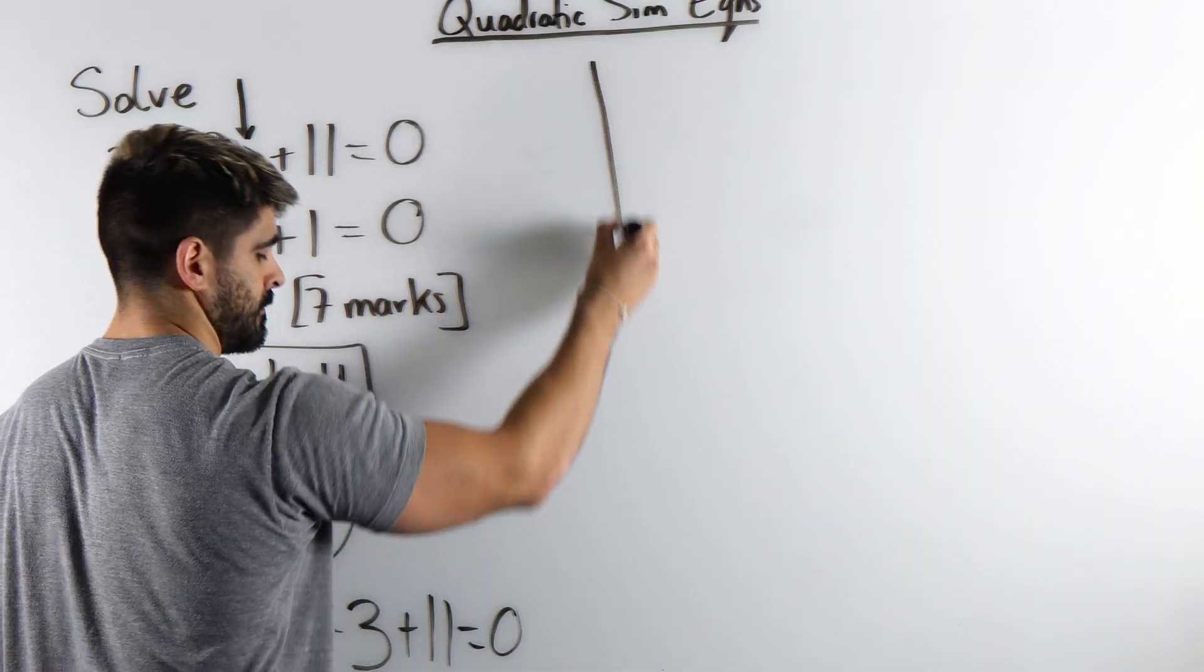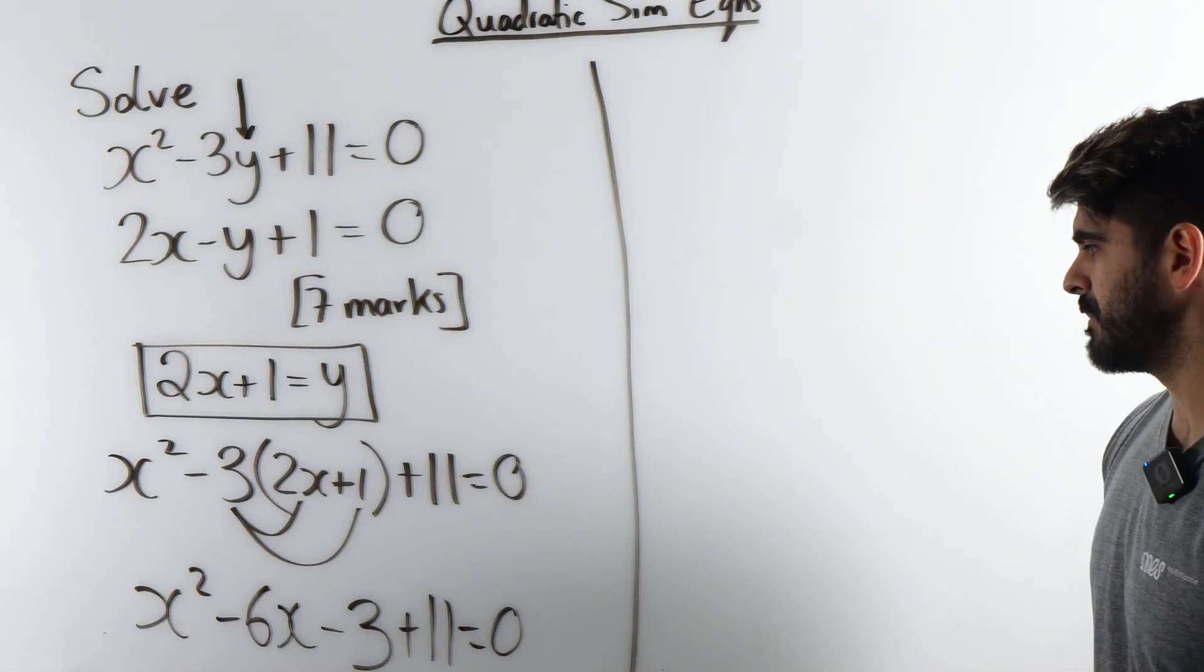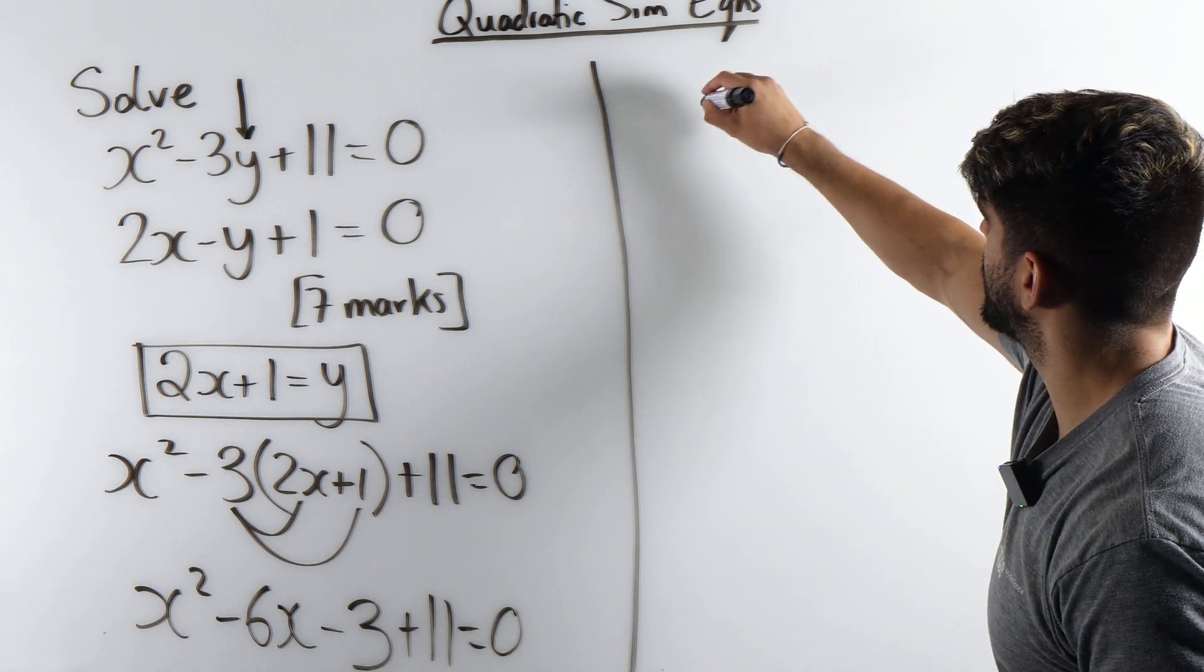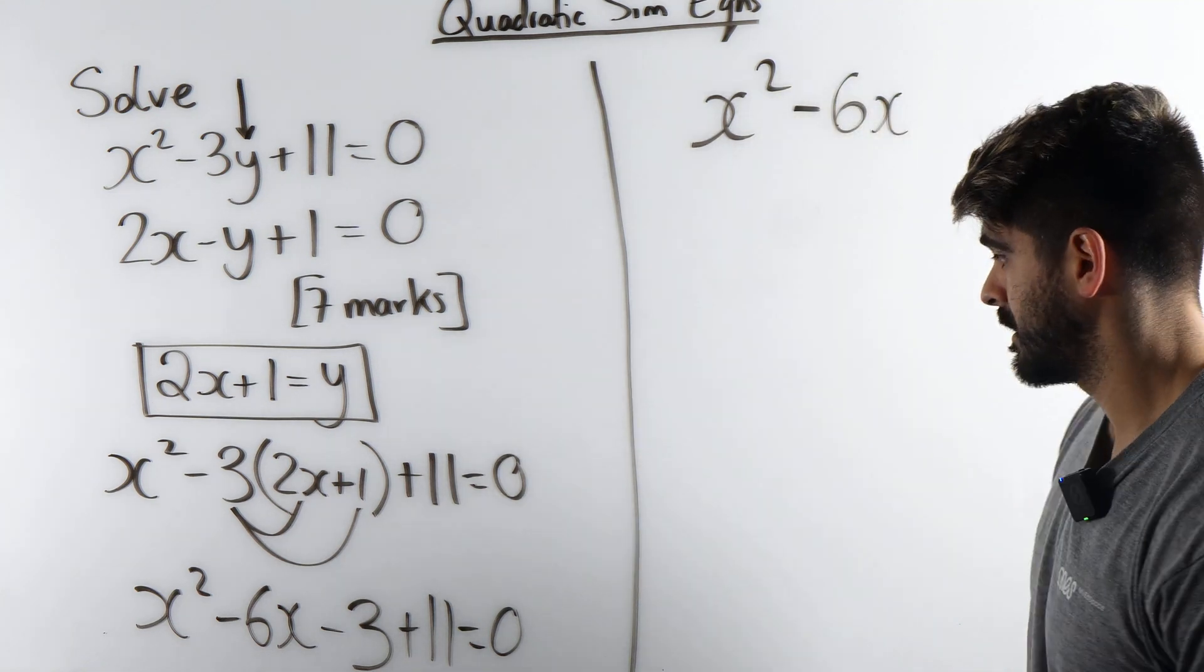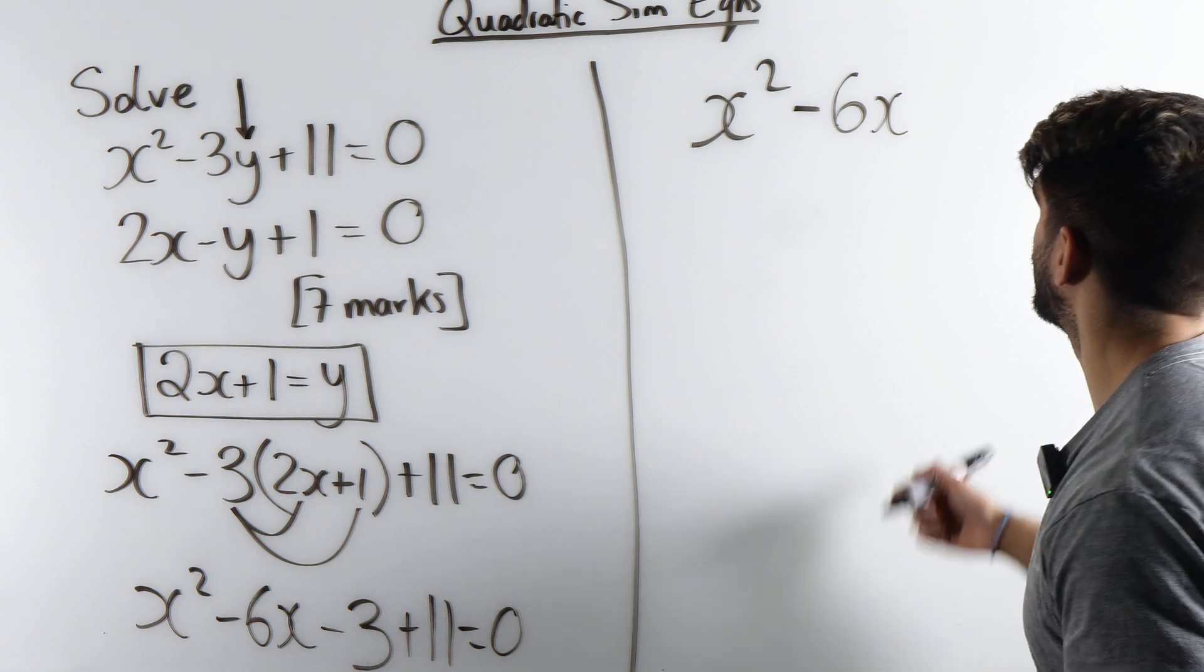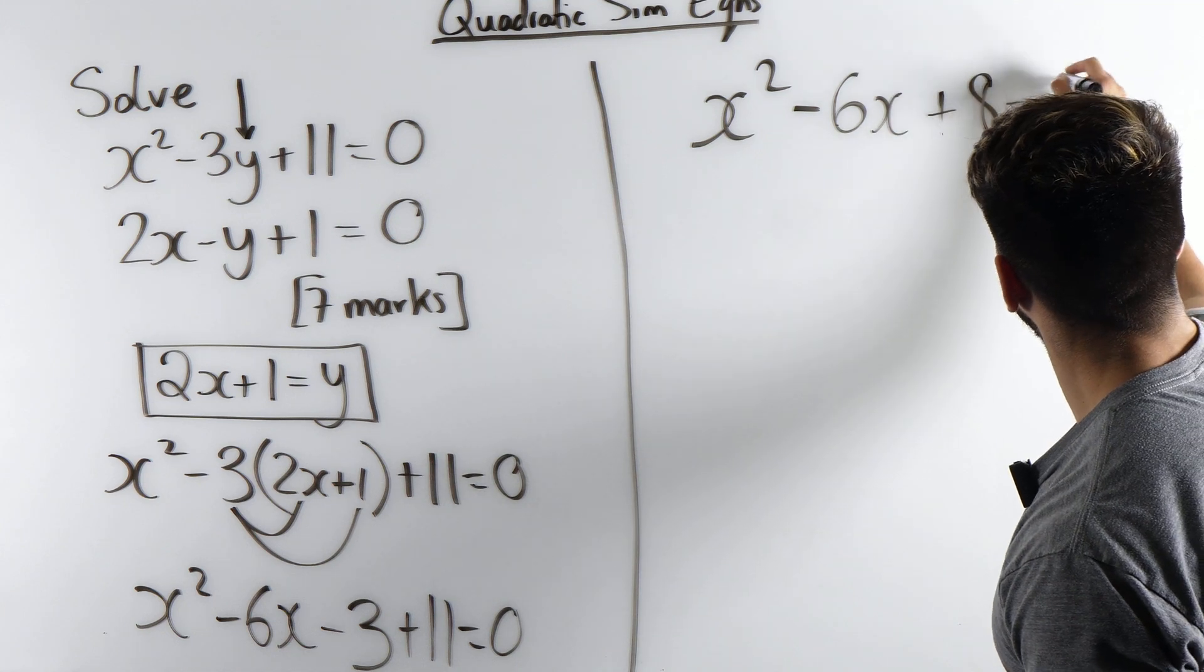All right let's move over here. So when we simplify that, I get x squared minus 6x, minus 3 plus 11 is 8, so plus 8 equals 0.